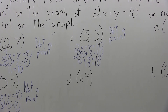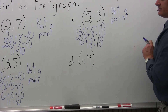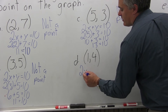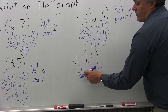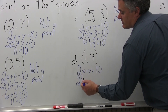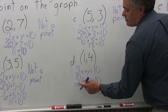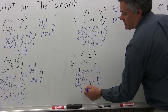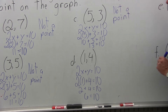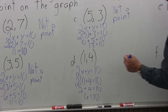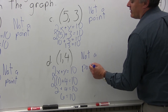Part D: determine if the point (1, 4) is a point on the graph of 2x plus y equals 10. Writing the equation 2x plus y equals 10 and putting in the x-coordinate of 1: 2 times 1 plus 4. Two times 1 is 2, plus 4 more gives the equation 6 equals 10 — still not true. So (1, 4) is not a point on the graph of 2x plus y equals 10.